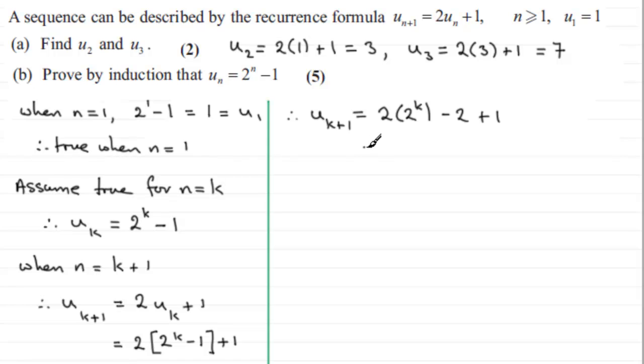Now when it comes to multiplying these two together, because they're in the same base here, 2, this is 2 to the power 1 times 2 to the power k, so we can just add the powers. So that's 2 to the power k plus 1. And then minus 2 plus 1 is minus 1. And we can see that if it is true now for n equals k, it's true for n equals k plus 1.